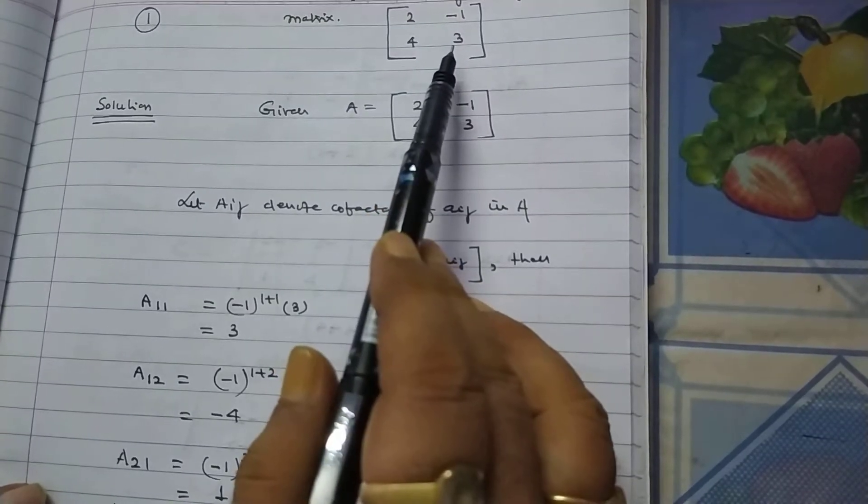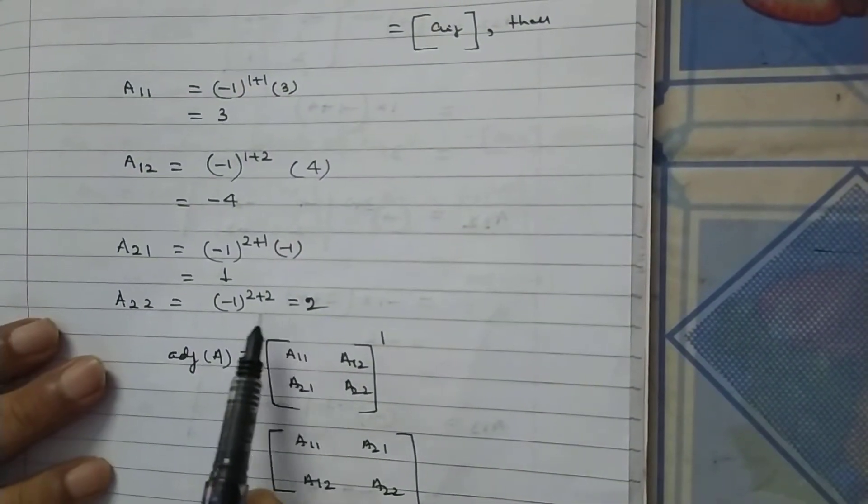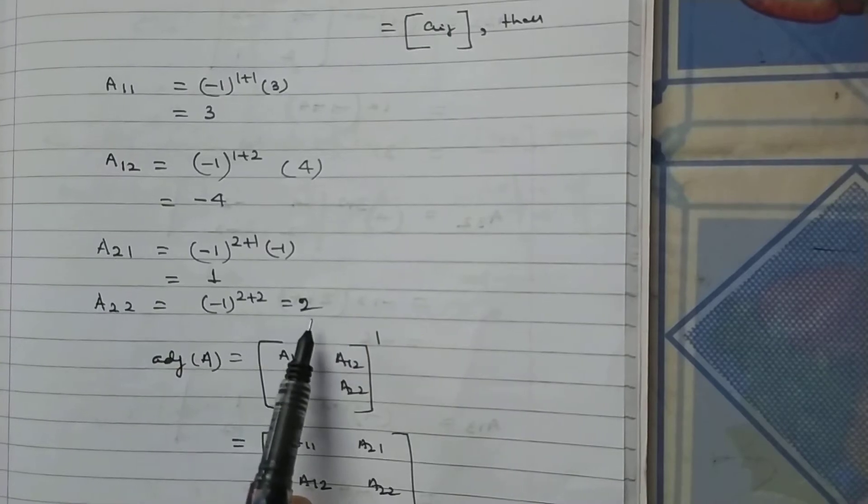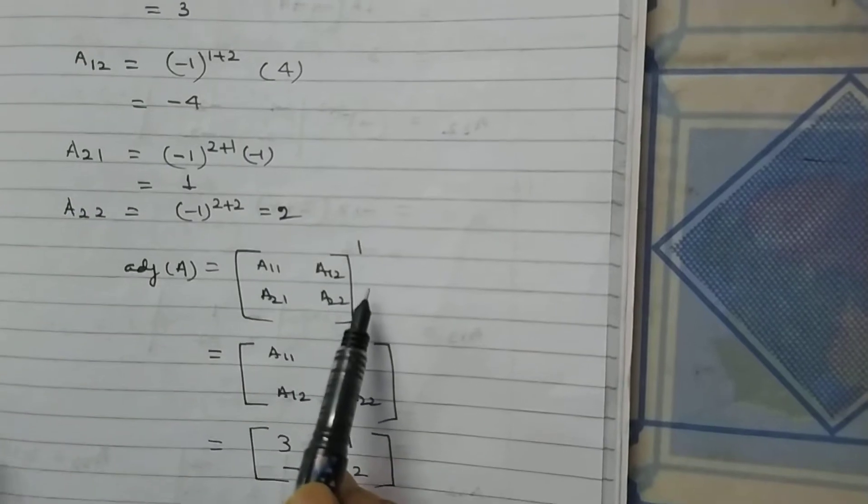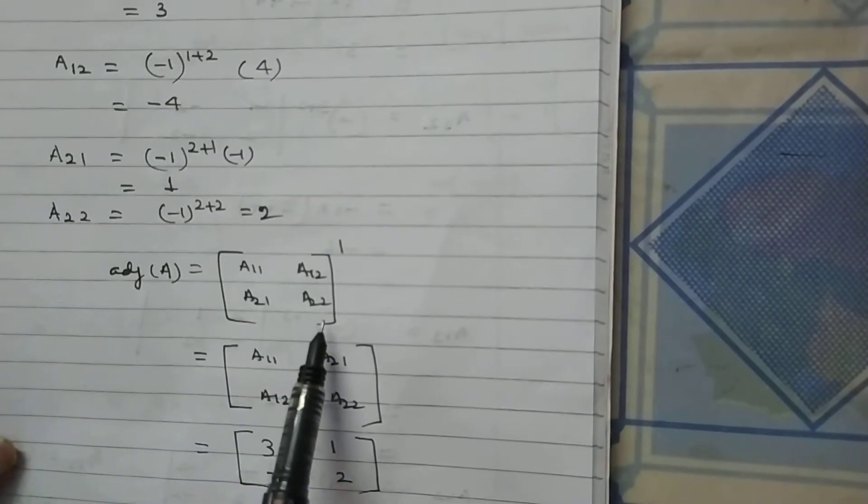So, it will be minus 1 to the power 2 plus 2, that is 2. So, adjoint of A is A11, A12, A21, A22.